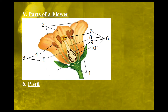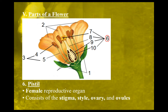Part six is the pistil. The pistil can consist of four separate parts or organs. The pistil is the female reproductive organ of the plant. It consists of the stigma, the style, the ovary, and the ovules.